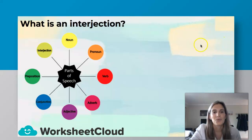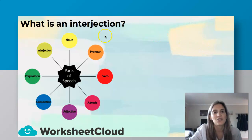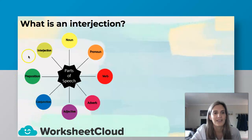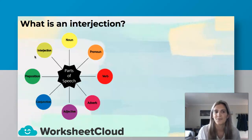I put this here so that you can understand where interjections come from. We have our parts of speech: nouns, pronouns, verbs, adverbs, adjectives, conjunctions, prepositions, and look — interjections. So interjections form part of our parts of speech.